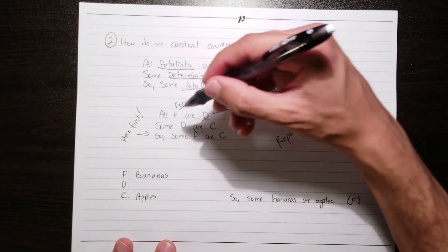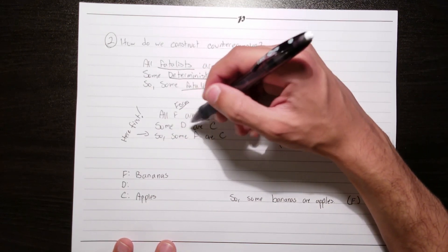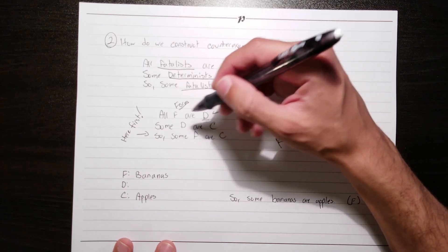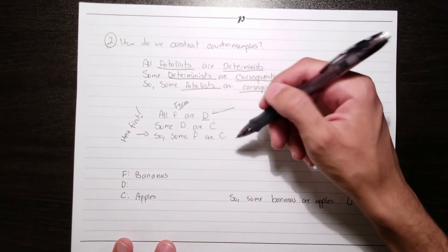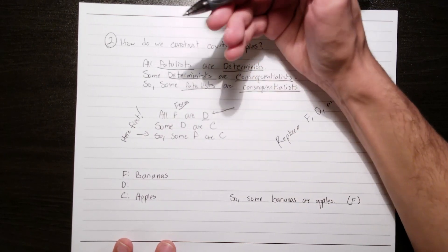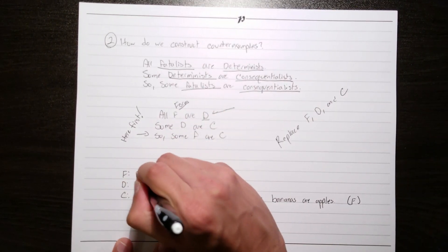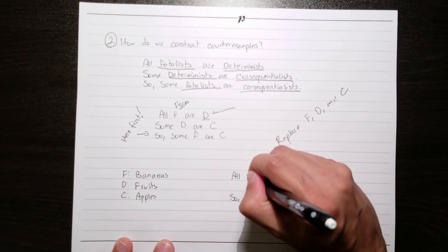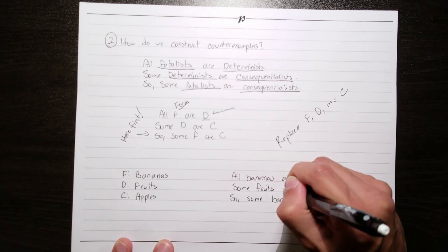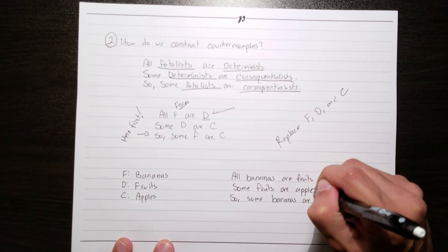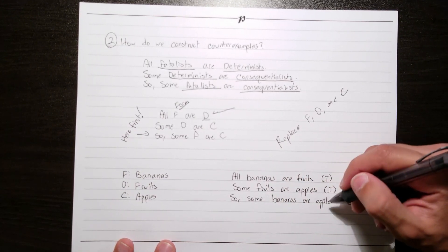So now we need to replace the content of the premises with something that will make them both true. Right now what we've got is that all bananas are something, and that some something are apples. Well, here's an idea. Let's make D fruits. That makes our first premise say, all bananas are fruits, which is true. And it makes our second premise say, some fruits are apples, which is also true. And so we've done it.